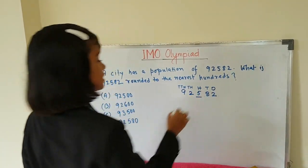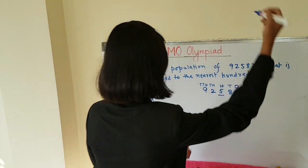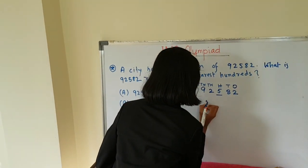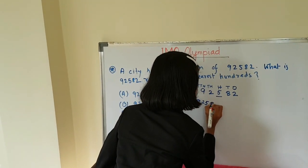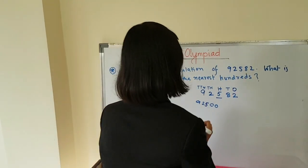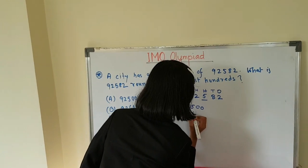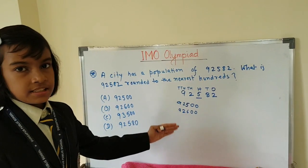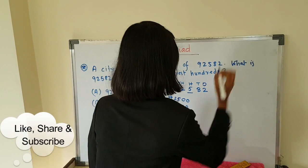Looking at 92,582 — it can be rounded to 92,500 or it can be 92,600. So the answer is either ninety-two thousand five hundred or ninety-two thousand six hundred — one of these two.